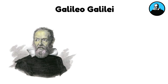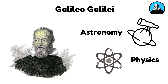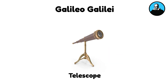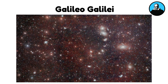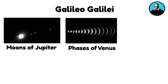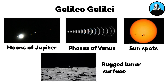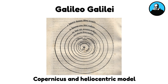Galileo Galilei had major contributions to astronomy and physics. He significantly improved the design of the telescope, allowing for more detailed celestial observations. With his enhanced telescope, Galileo observed the moons of Jupiter, the phases of Venus, sunspots, and the rugged lunar surface, providing substantial support for the Copernican heliocentric model.